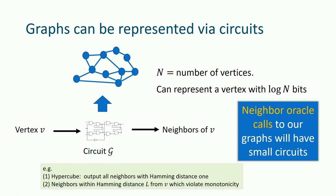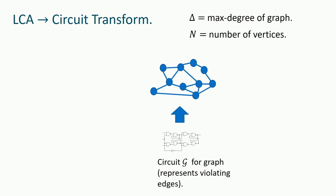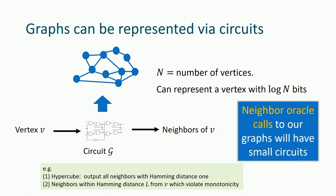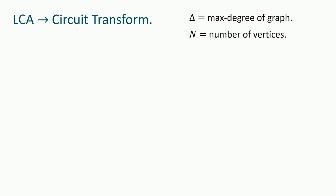The graph we deal with is restricted to the middle band — between n/2 minus O(sqrt(n)) and n/2 plus O(sqrt(n)). Because of this restriction, the number of elements above any point u in the shaded area is 2^{O-tilde(sqrt(n))}, so we can brute-force check which ones violate monotonicity. That gives us the neighbor oracle via a small circuit.